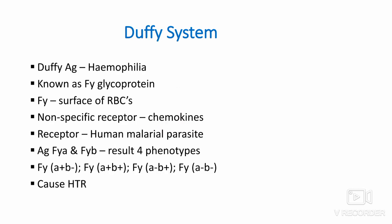Duffy system: The Duffy antigen was first isolated in a patient called Duffy who suffered from hemophilia. It is also known as FY glycoprotein, present on the surface of RBCs. It is a non-specific receptor for many chemokines and can act as a receptor for the human malarial parasite Plasmodium vivax. The antigens FYA and FYB on Duffy glycoprotein result in four possible phenotypes: FYA+B−, FYA+B+, FYA−B+, and FYA−B−. These antibodies are immunoglobulin G subtypes and can also cause HTR symptoms.